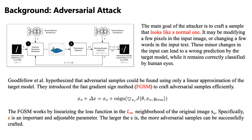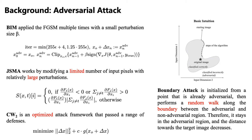FGSM works by linearizing the loss function in the L-infinity neighborhood of the original image. Epsilon is an important and adjustable parameter — the larger the epsilon, the more adversarial samples can be successfully crafted. BIM applies FGSM multiple times with a small perturbation size beta. JSMA works by modifying a limited number of input pixels with relatively large perturbations. CW_2 is an optimized attack framework that bypassed a range of defenses. Boundary Attack is initialized from a point that is already adversarial, then performs a random walk along the boundary between adversarial and non-adversarial regions, staying in the adversarial region while decreasing the distance towards the target image.